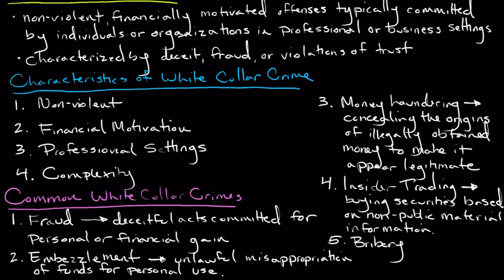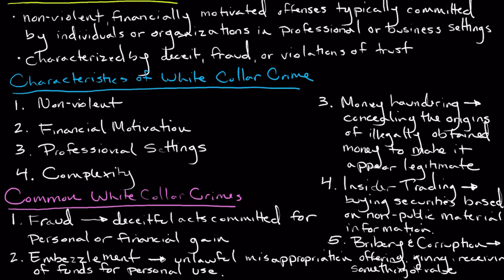The last type of white-collar crime we're going to explore is bribery and corruption. These are oftentimes separated, but we'll discuss them together since they often go hand in hand. Bribery involves offering, giving, receiving, or soliciting something of value to influence the actions or decisions of individuals in positions of power. Corruption is the abuse of entrusted power for personal gain, often involving public officials or corporate executives.